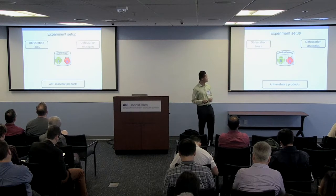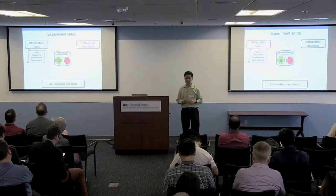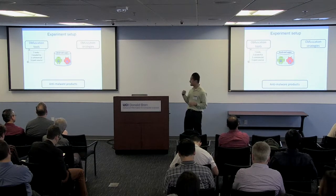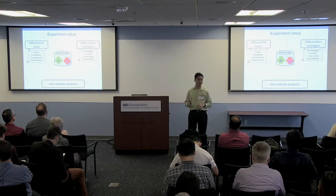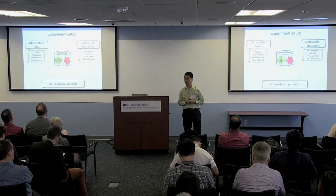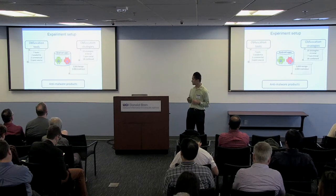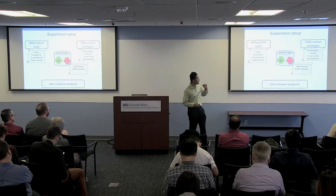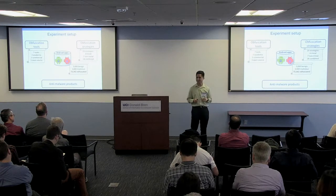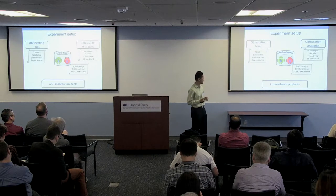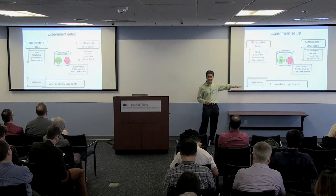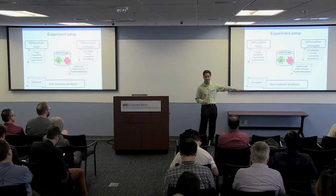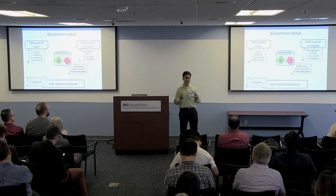For the experimental setup, we took seven tools from three different types — academic, commercial, and open source. We looked at about 30 different obfuscation strategies — trivial, non-trivial, and combined. We took 3,000 benign and 3,000 malicious apps, applied the 30 strategies and seven tools, giving us over 73,000 obfuscated apps. We also obtained over 60 commercial anti-malware products — the most downloaded and highest-rated ones on Google Play.